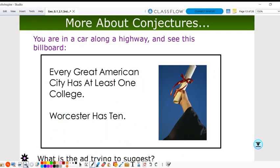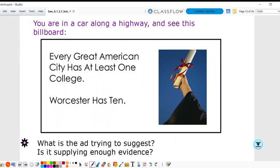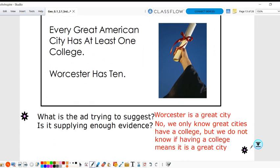You're in a car along the highway and see this billboard: every great American city has at least one college, Worcester has ten. What is this ad trying to suggest? Is it supplying enough evidence? You might think Worcester has to be the greatest because it has more than one. Does that ad supply enough evidence? Worcester is a great city, but no. We only know great cities have a college, but we don't know if having a college means it's a great city. Does having a college make you a great city? That's an interesting ad.